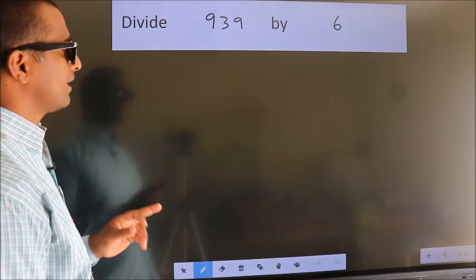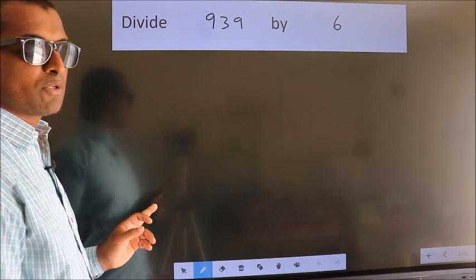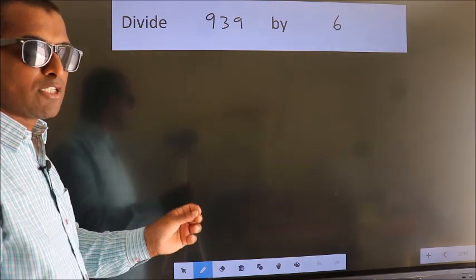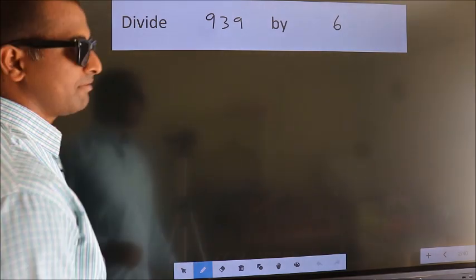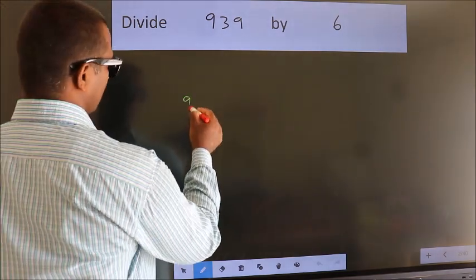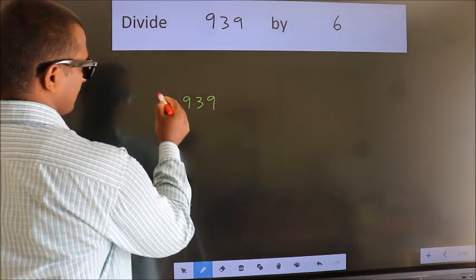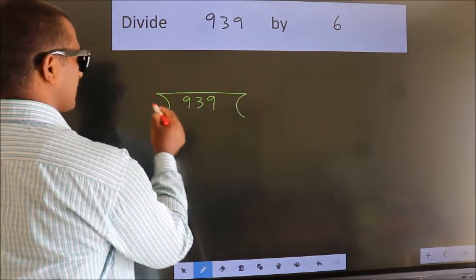Divide 939 by 6. To do this division, we should frame it in this way: 939 here, 6 here.